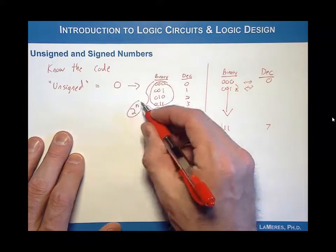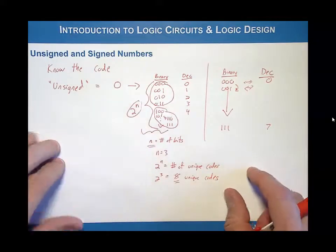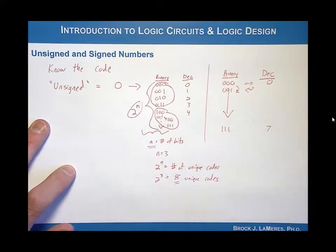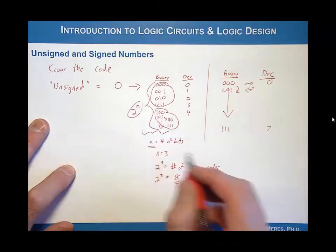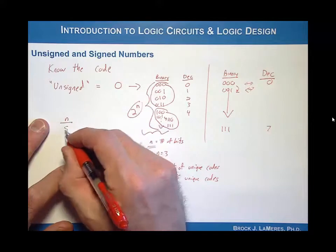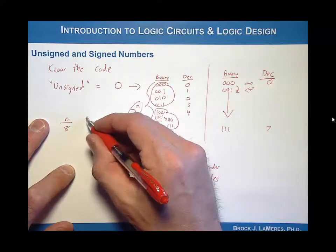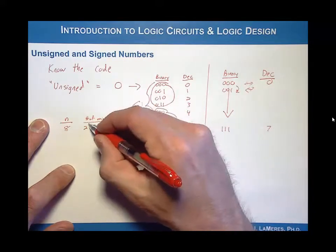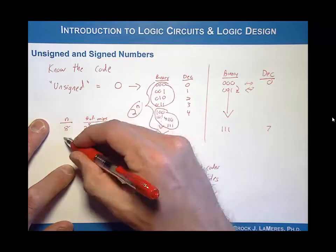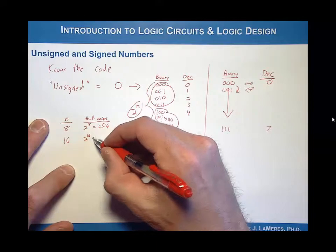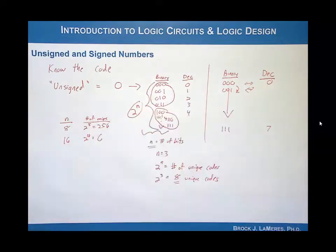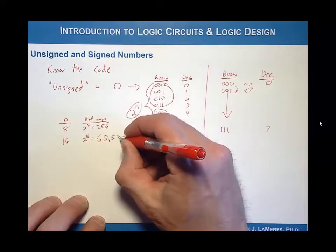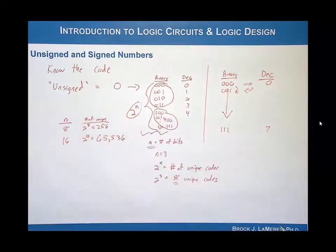Two to the n is interesting because we can immediately know how many unique codes we have. Let's look at some very common widths of data words. If n equals 8, the number of unique codes is two to the eighth, which equals 256. If you had n equals 16, you would have two to the sixteenth, which equals 65,536. So the number of codes scales pretty quickly with the number of bits.